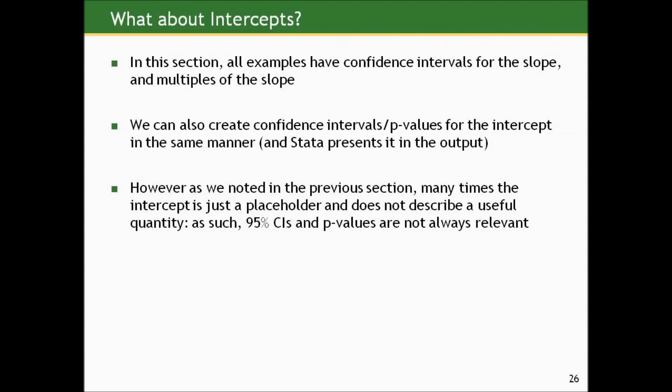What about the intercepts? We could also create confidence intervals and p-values for the intercept in the same manner — the sampling behavior is normal and the same approaches apply, with the t-distribution for smaller samples. However, as noted in previous sections, many times the intercept is just a placeholder. We need it to specify the equation of the line, but it does not in itself describe a useful scientific or substantive quantity. As such, the 95% confidence intervals and p-values are not always necessary or relevant, even though we can compute them.